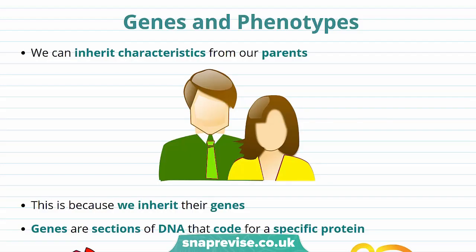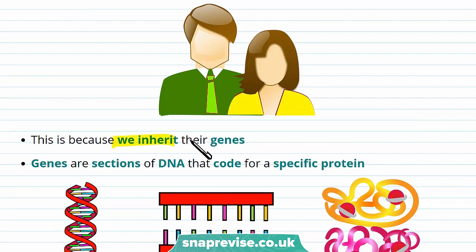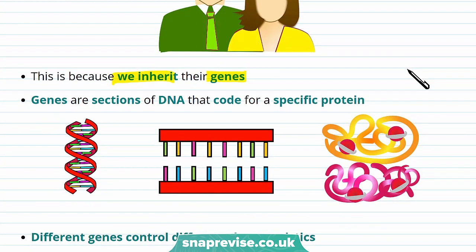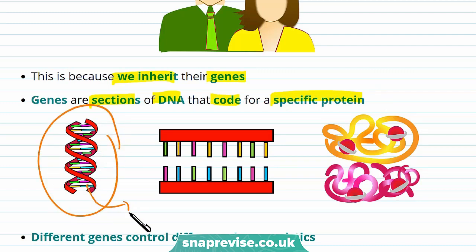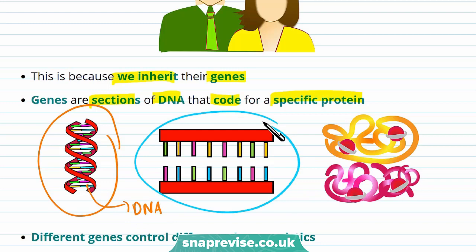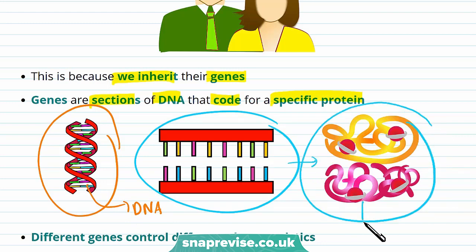The reason we look similar to our mother or our father is that we inherit characteristics from our parents, and this happens because we inherit their genes. Genes are defined as sections of DNA that code for a specific protein. The DNA in our body contains lots of genes. These genes carry instructions and they tell your body how to make a specific protein — in this case, haemoglobin.